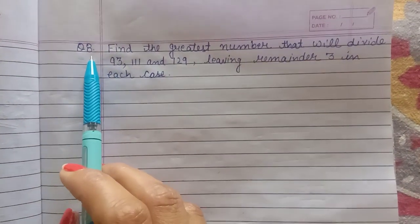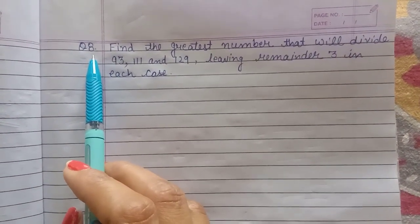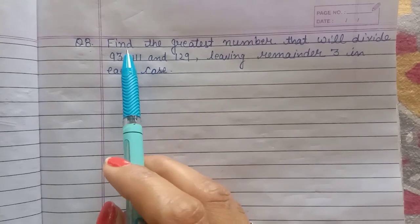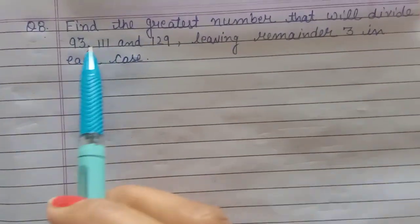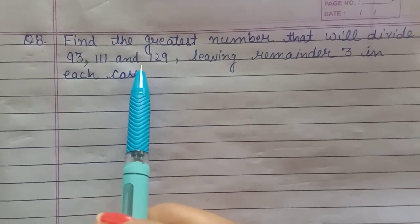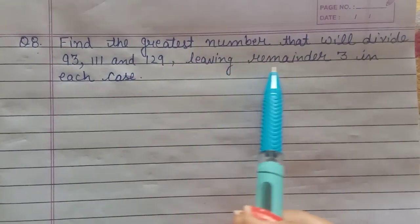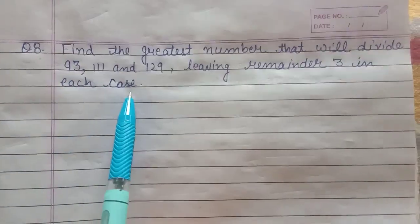Hello Vita, this is question number 8 of exercise 8V. The question is: find the greatest number that will divide 93, 111, and 129, leaving remainder 3 in each case.